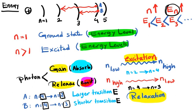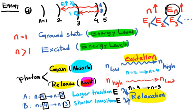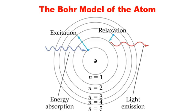Larger transition means higher energy is released, and shorter transition means lower energy is released. Relating this to wavelength: higher energy means shorter wavelength, and lower energy means longer wavelength, because energy and wavelength are inversely proportional to each other. So for a larger transition, energy is higher and we have shorter wavelength. For a shorter transition, we have lower energy and longer wavelength.